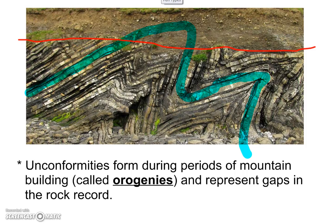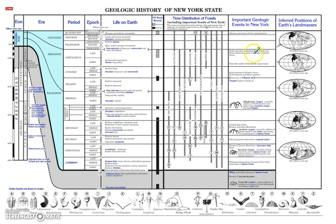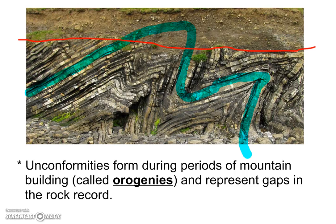Unconformities tend to form when mountains are building, and periods of mountain building are called orogenies. When we look at our geologic timescale reference table, we'll see things like the Alleghenian Orogeny, the Acadian Orogeny, the Taconian Orogeny, and the Grenville Orogeny — all periods when mountains were forming in our state. So these unconformities represent gaps in the rock record: rocks that are missing because they got weathered and eroded away, leaving a gap in the clues that tell us about the past.